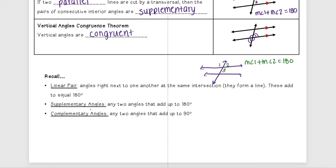Other things to remember: supplementary angles are two angles that add up to 180, and complementary angles are angles that add up to 90. That's it for this video. We'll go on to the next one where we will actually start finding measures of angles using these theorems.